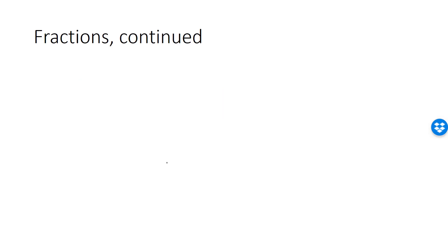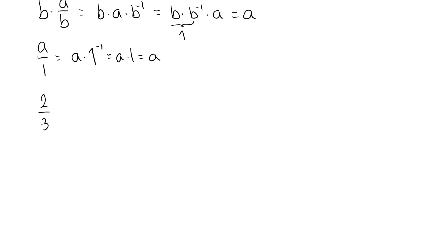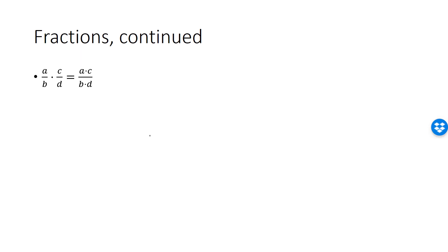The next rule tells us how to multiply fractions. To compute the product of 2 over 3 and 1 over 3, we get a fraction where the numerator is the product of the numerators — 2 times 1, which is 2 — and the denominator is the product of the denominators — 3 times 3, which is 9. In general, A divided by B multiplied by C divided by D is AC over BD. Just multiply the numerators and the denominators separately.